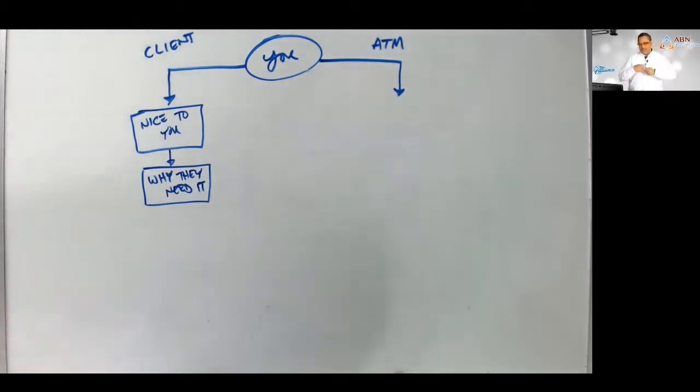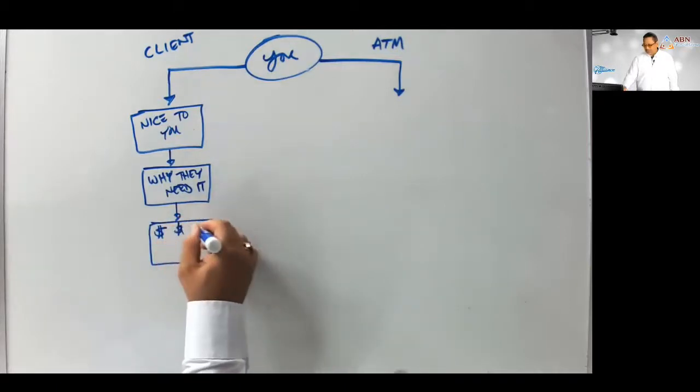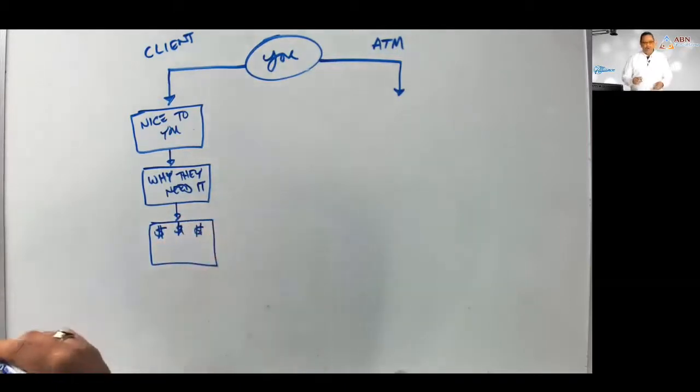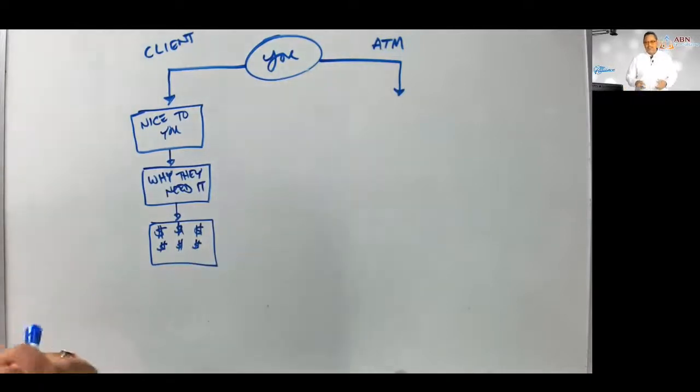Then you start showing them prices, different premium prices. They're going to say, oh wow, that looks great. I thought it would be way more. How much for double that? All of a sudden, you start going, dollar signs are thinking, commissions, commissions, commissions. You're thinking it's a done deal.